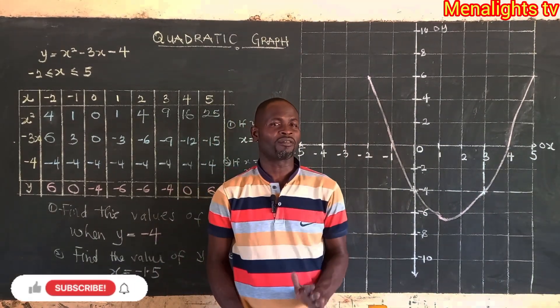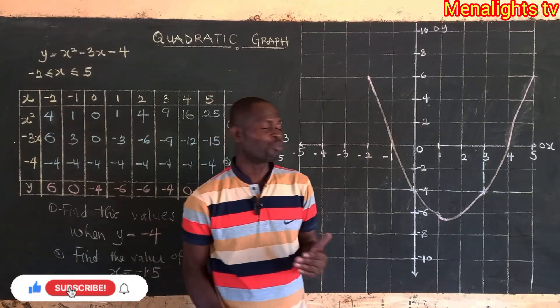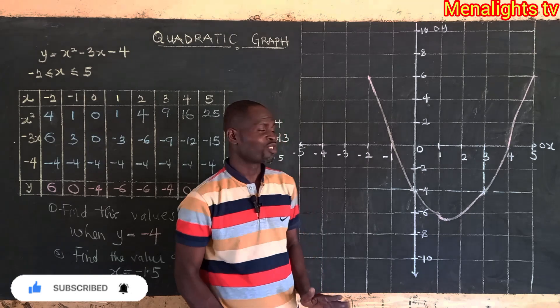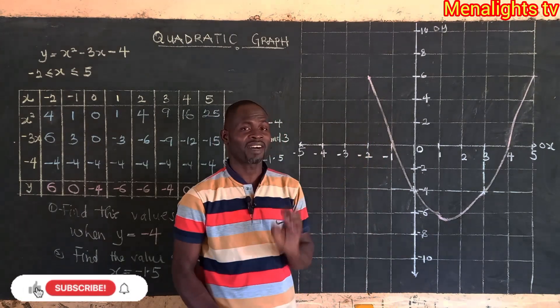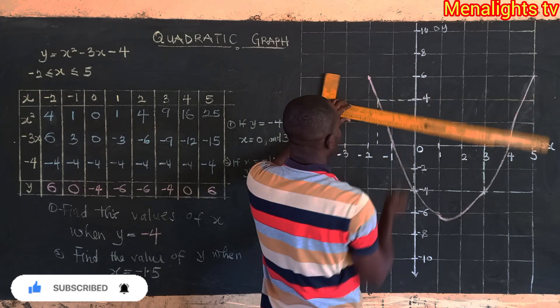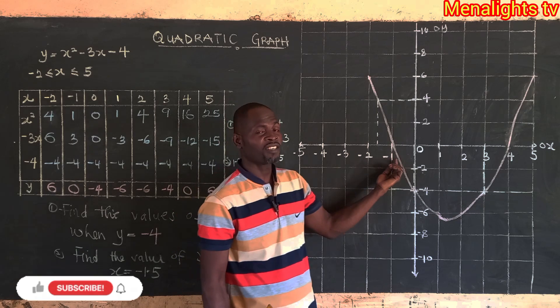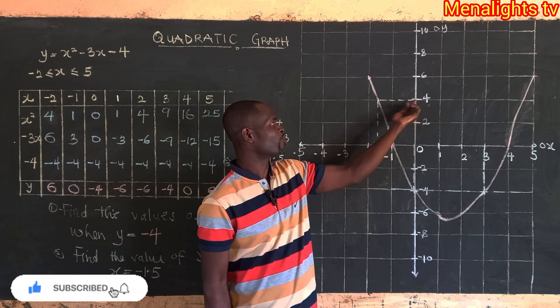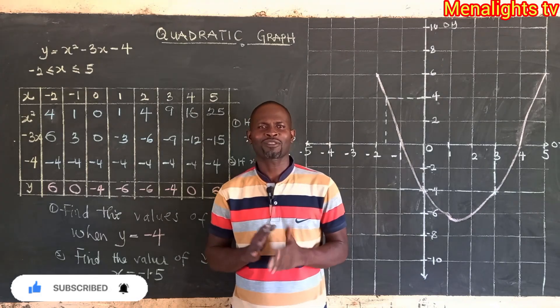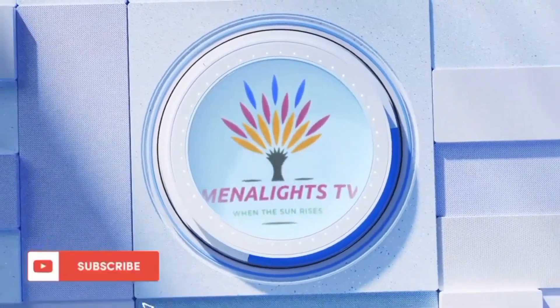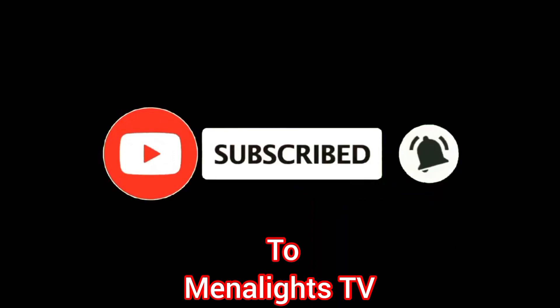We are also asked to find the value of y when x is equal to negative 1.5. We locate negative 1.5 on the x-axis — that's in between negative 2 and negative 1. We project upward from there to touch the graph, then bend across to read the y-axis value. Thank you so much for watching. Remember to subscribe to the channel MenalizeTV for more updates.